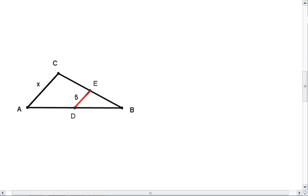Again, if DE is the mid-segment, that means that the third side is twice as long as DE. So if DE is 5, AC must be 10.